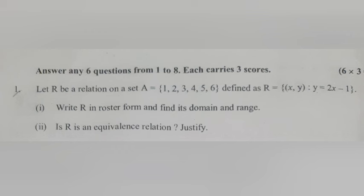Let r be a relation on a set A = {1, 2, 3, 4, 5, 6}, defined as r = {(x, y) : y = 2x - 1}. First, write r in roster form and find its domain and range.